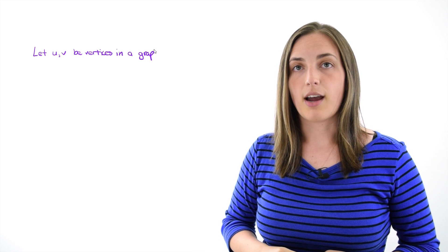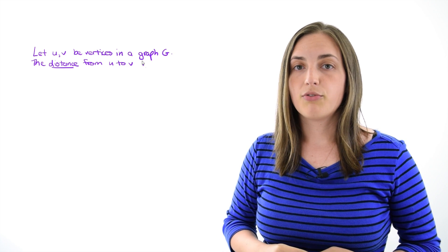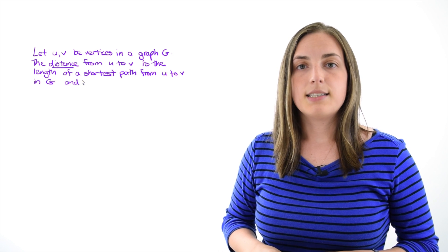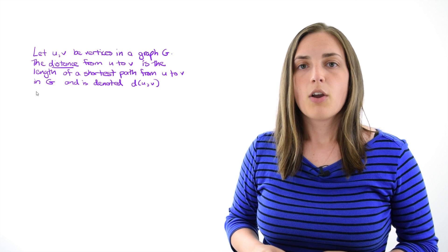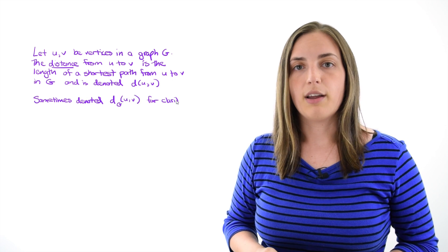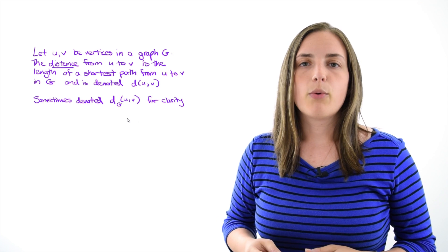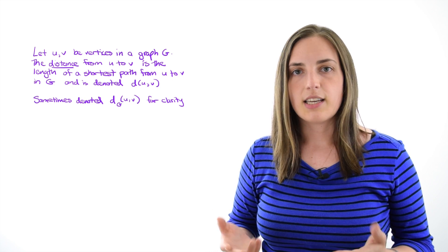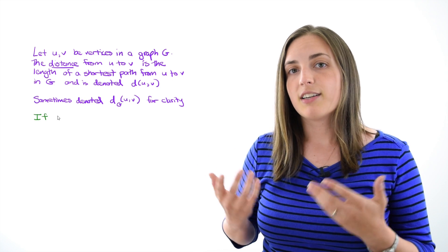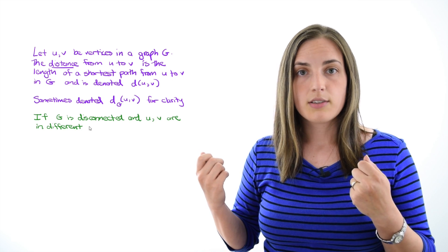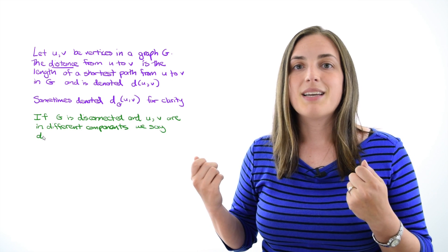If we take a graph and we let u and v be vertices in that graph, the distance from u to v is the length of a shortest path, and we denote it by d(u, v). Sometimes for clarity we denote it by d_G(u, v), because maybe we want to specify the particular graph we are considering. Usually we think of distance in a connected graph, but if you have a disconnected graph and u and v are from different components, we say that the distance between them is infinity.